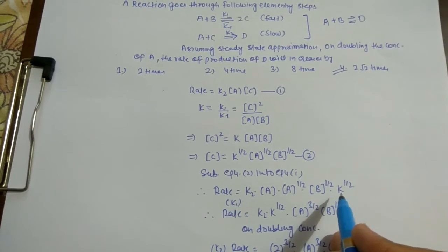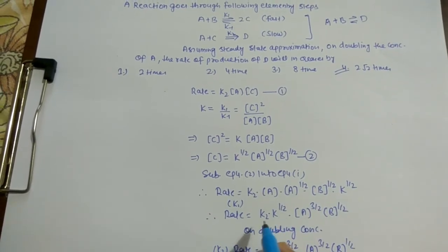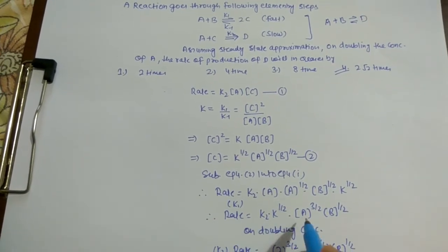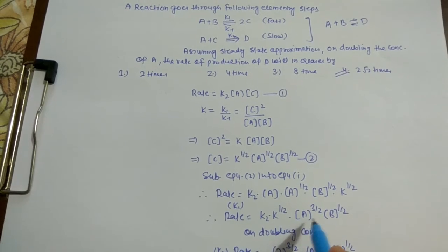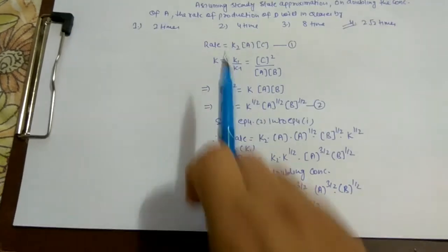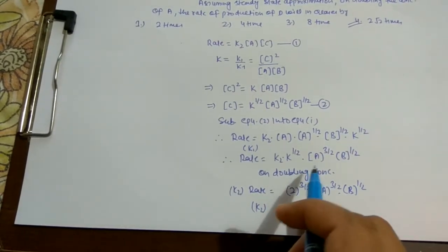k2 and K are constants so we will multiply them. [A]^(1/2) [A]^(1) gives [A]^(3/2) and [B]^(1/2). Now we see that with respect to A, the order of reaction is 3/2.